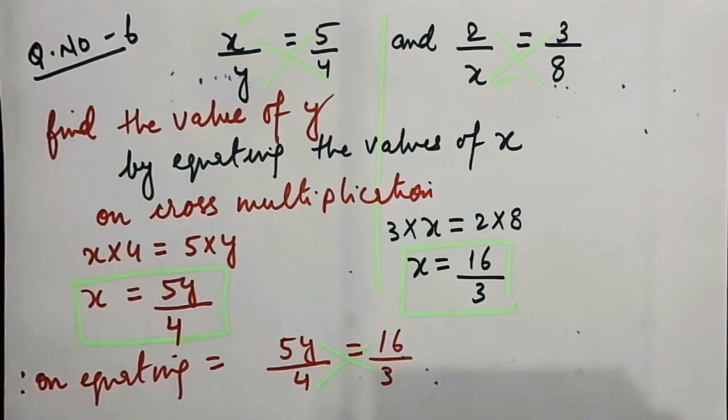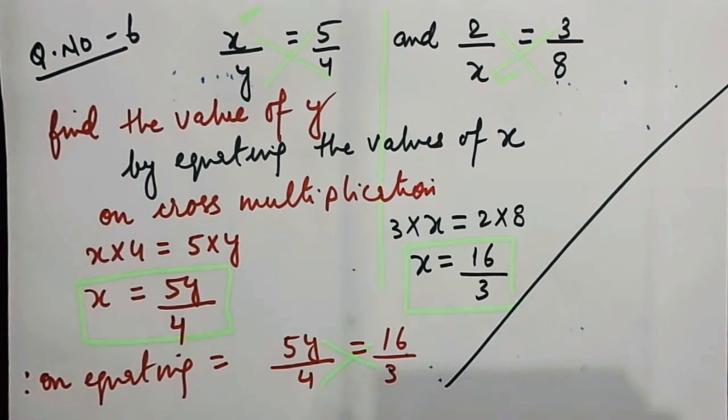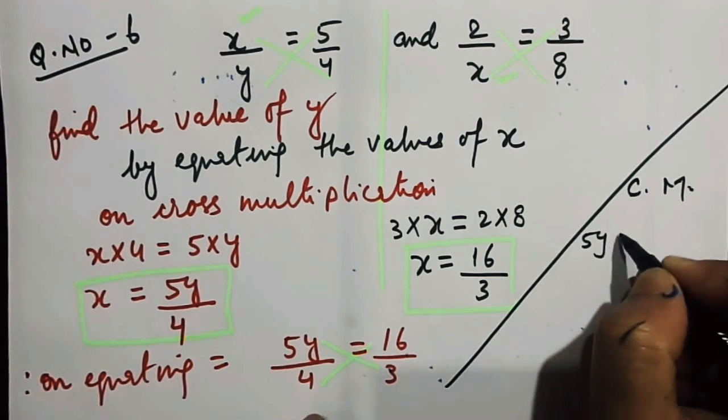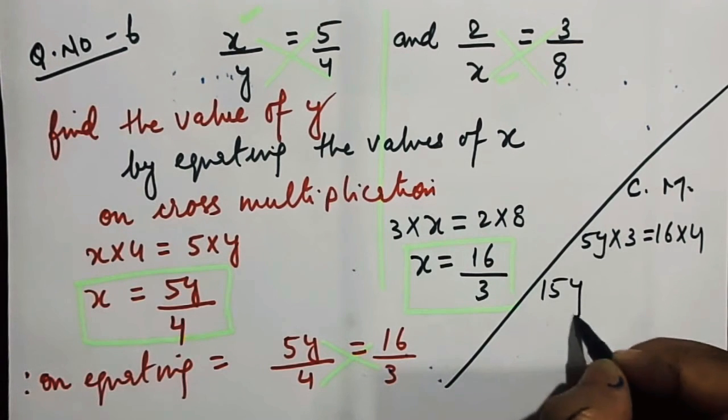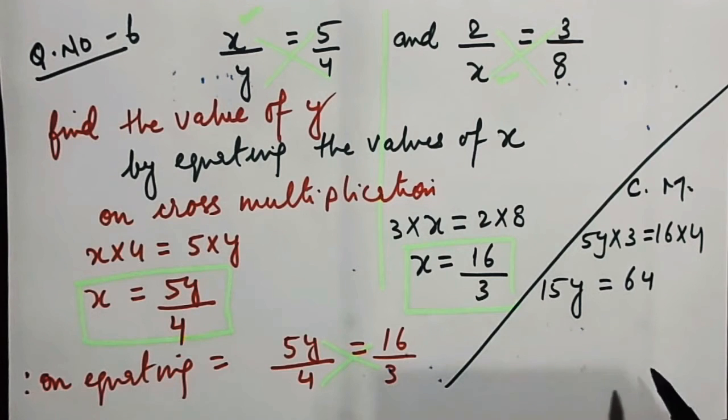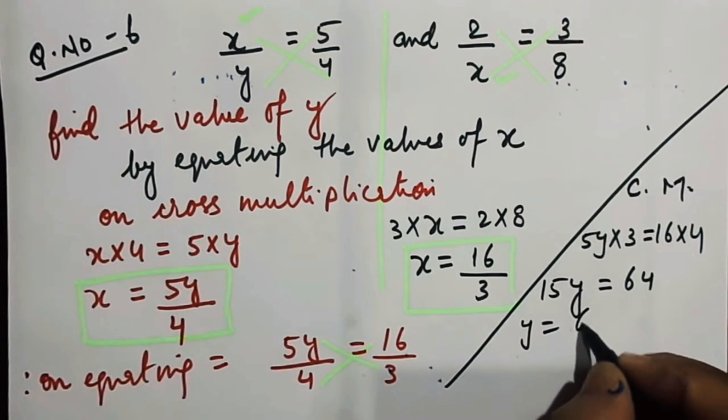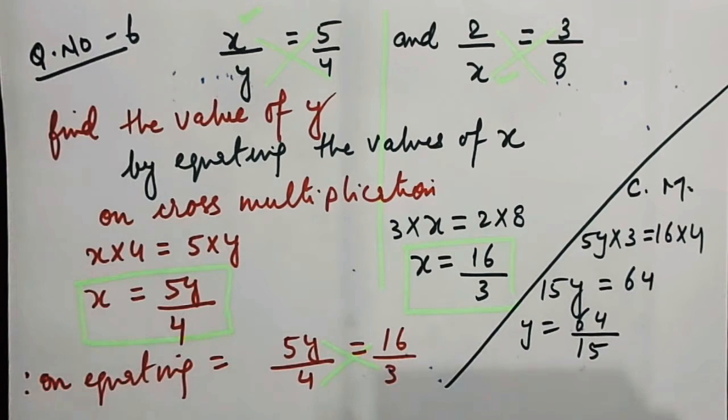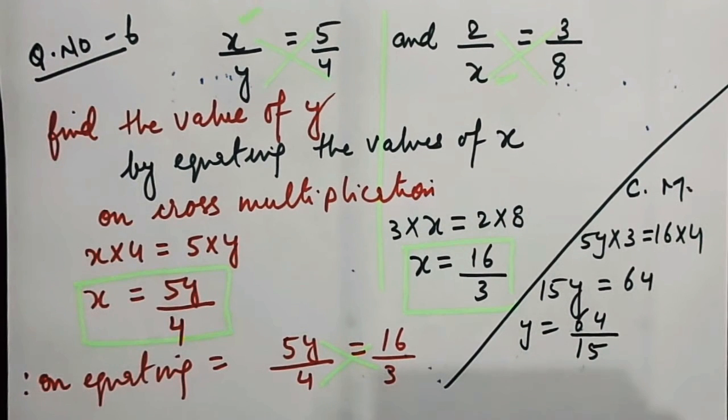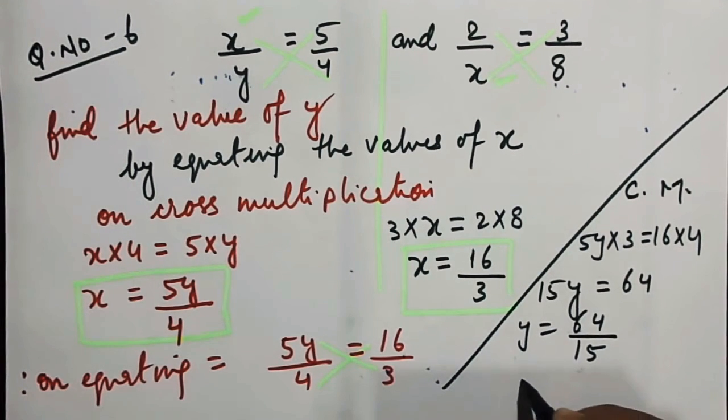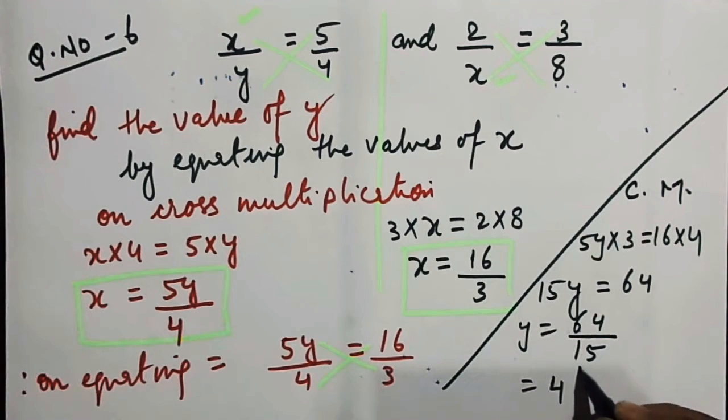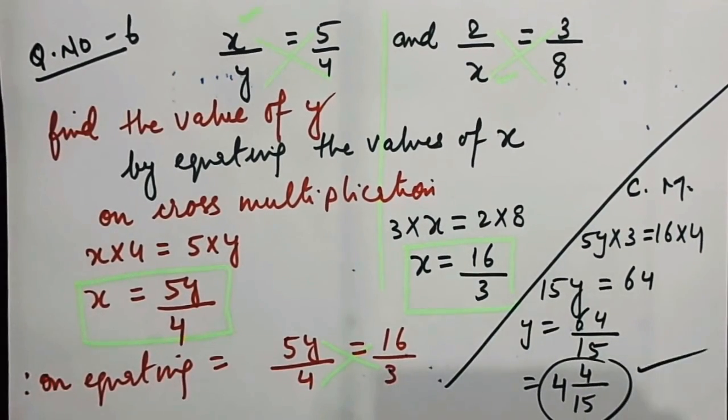Let's do cross multiplication once again. On cross multiplication, you will get 5y into 3 will be equal to 16 into 4. So 15y will be equal to 64, or y will be equal to 64 by 15. You can also convert this into a mixed fraction: 4 and 4 by 15.